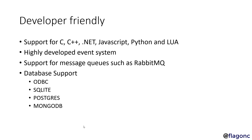FreeSWITCH is very developer-friendly. It supports C, C++, .NET, JavaScript, Python, and Lua. There is a highly developed event system — it generates events for everything. It supports message queues such as RabbitMQ and has extensive database support: ODBC, SQLite, PostgreSQL, and MongoDB. You can build your applications using many of these databases. It's very open to developers and a great choice for building new things.